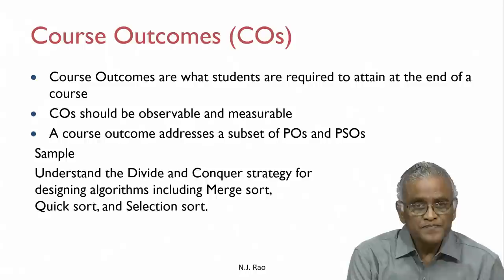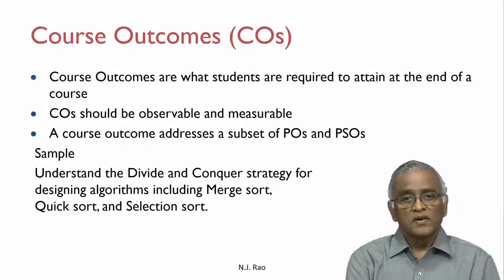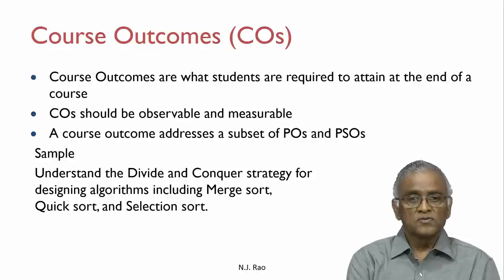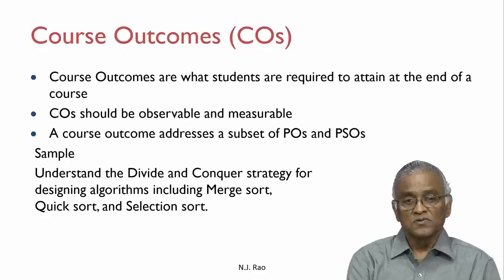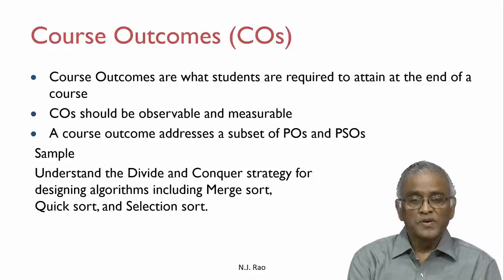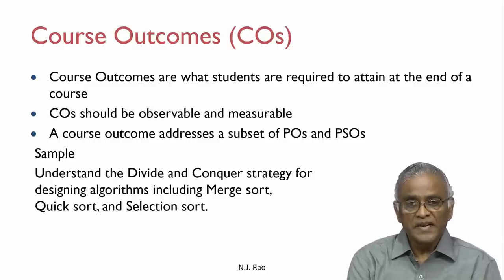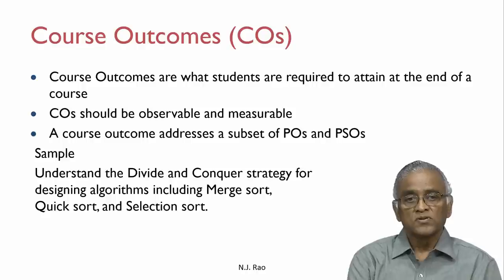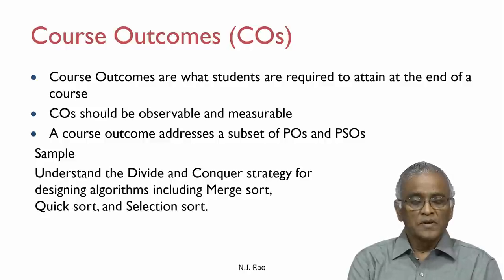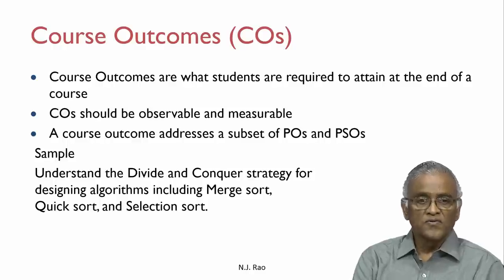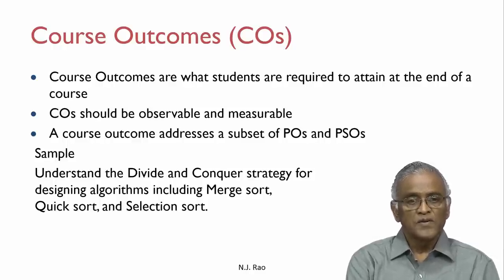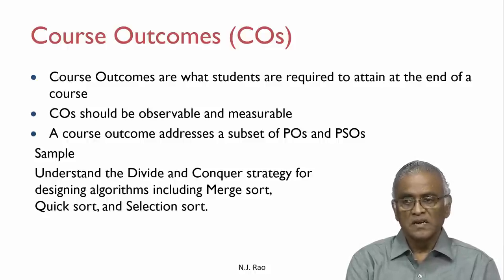Coming to Course Outcomes: COs are what students are required to attain at the end of a course. COs should be observable and measurable. A course outcome addresses a subset of POs and PSOs — all POs and PSOs have to be dominantly attained through courses, so COs need to be connected to POs and PSOs. Here is a sample from a computer science course: 'Understand the divide and conquer strategy for designing algorithms, including merge sort, quick sort, and selection sort.' It is very specific. The goal is very clear and is related to understanding.